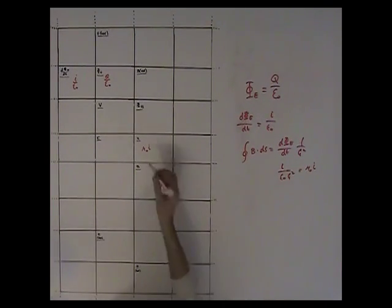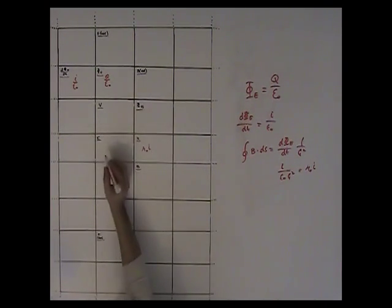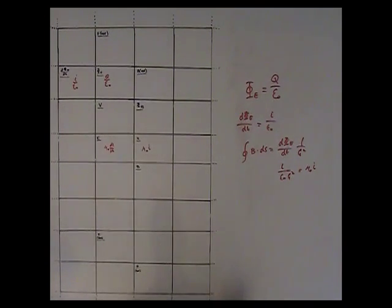Next, we'll take the time derivative of this. And this is Mu Knot D I DT. And that's the E box.